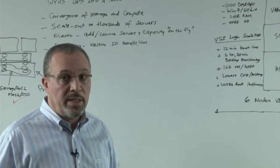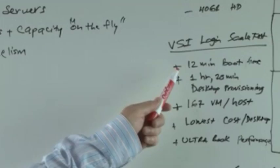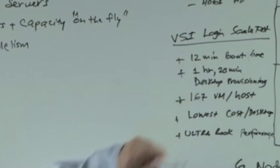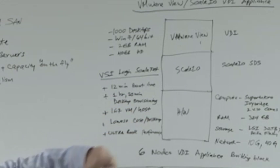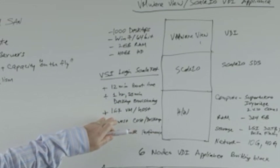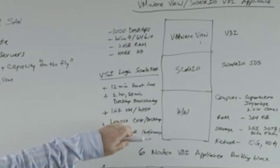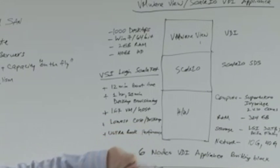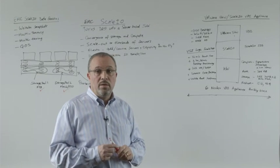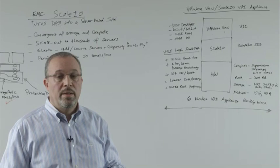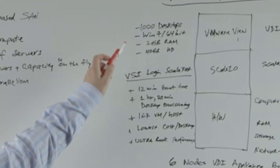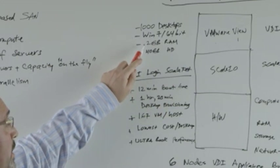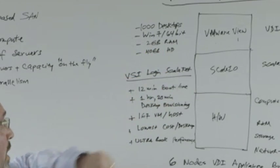The test results from Login VSI showed a 12-minute boot time for 1,000 desktops, a record in the industry, 1 hour and 28 minutes for desktop provisioning, a density of 167 VMs per host, the lowest cost per desktop, as well as ultrabook performance for 1,000 desktops. The target test environment for VSI Login included 1,000 desktops based on Windows 7 64-bit, each with 2 GB of RAM and 40 GB of hard disk.